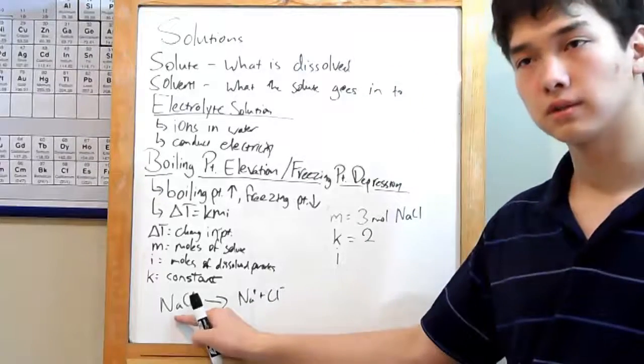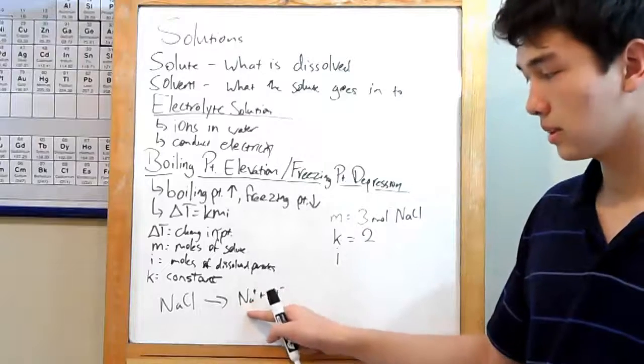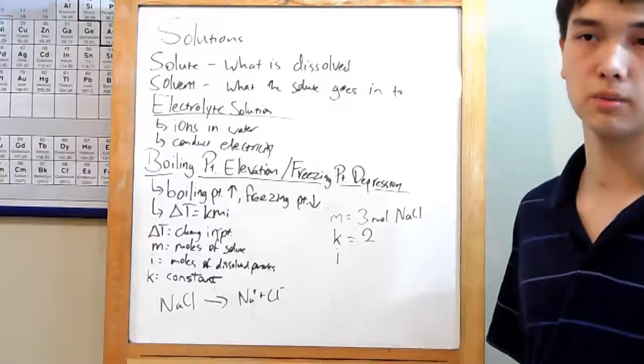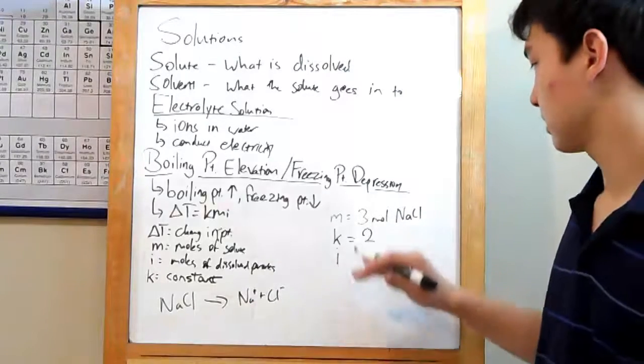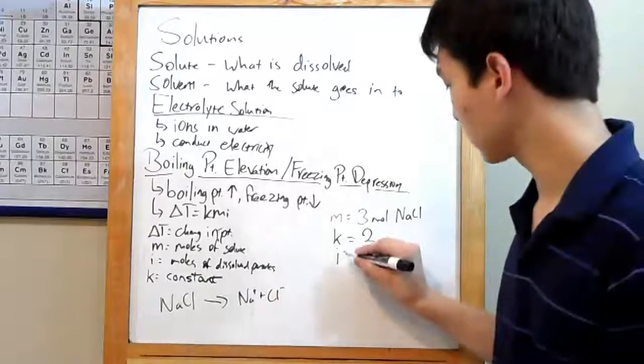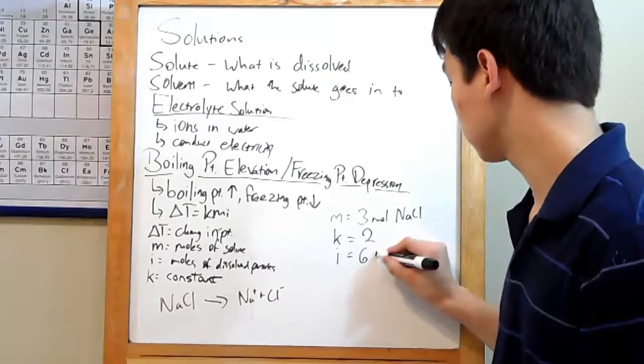So actually, for every 1 mole of sodium chloride, you'll have 1 mole of sodium and 1 mole of chloride, 2 moles total. So in this case, you need to multiply your 3 moles by 2, for a total of 6 moles under I.